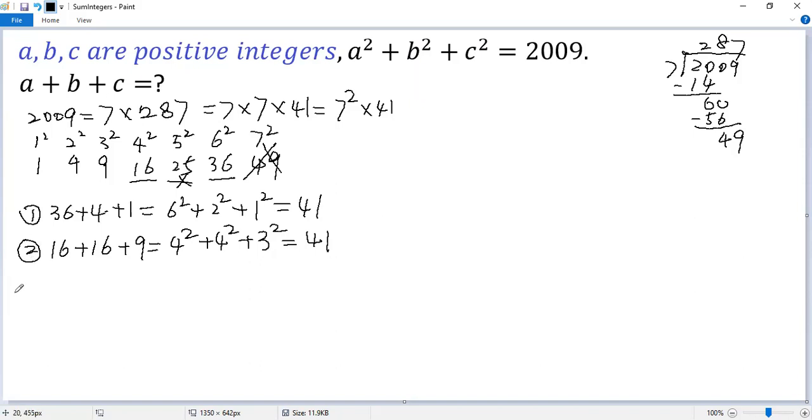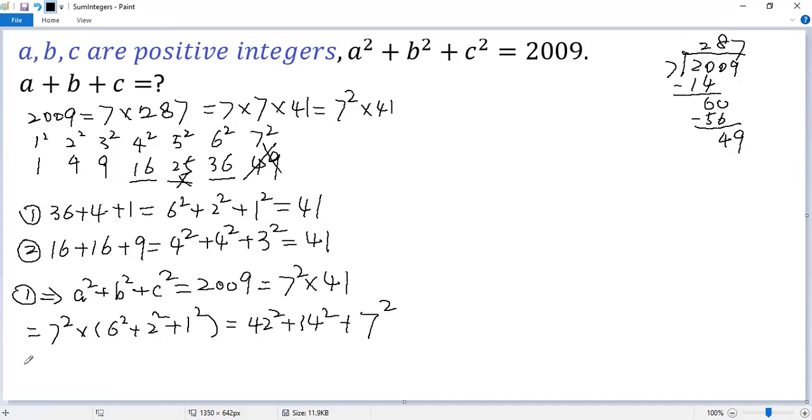So let's see the first case. We get a² + b² + c² = 2009. But this equals 7² times 41. We know 41 for the first case is 6² + 2² + 1². Distribute 7² to each term. So we get 42² + 14² + 7². That means a, b, c equal 42, 14, and 7, not necessarily in that order. But the sum should be the same. So a + b + c = 42 + 14 + 7.